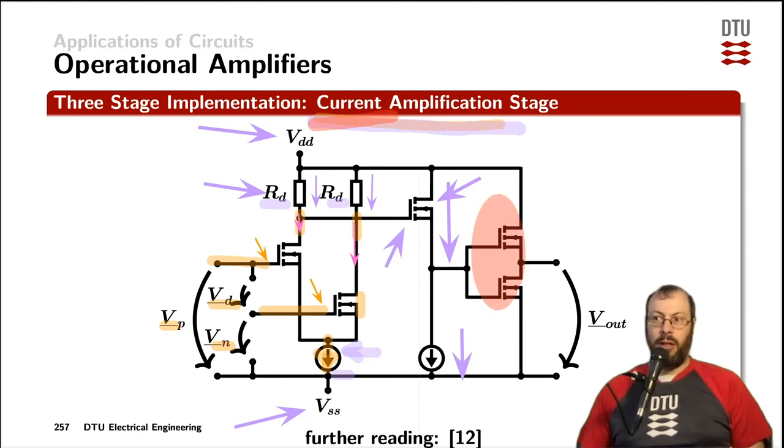The one that I'm showing here is a so-called totem pole stage, in this case containing two N channel MOSFETs. But very often one of those two could also be a P channel MOSFET. And finally we are driving the output of the operational amplifier here.